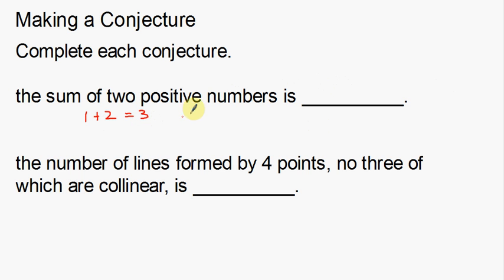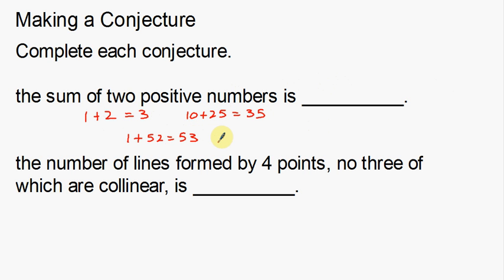What are they trying to get me to see here? Let's try some other positive numbers. 10 and 25 — that makes 35. Let's try 1 and 52, which gives me 53. So when I take the sum of two positive numbers — when I add two numbers together — I get 3, I get 35, I get 53.